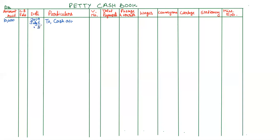Next is July 3 — purchase stationery. The treatment will come on the credit side: by stationery, we will write in the stationery column only. The amount of total payment is 800 rupees, so we will write 800 rupees in the total payment column as well as in the stationery column.